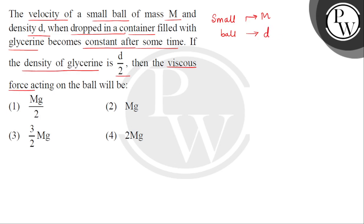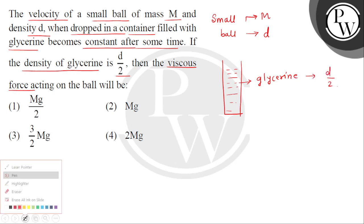अब इस ball को जब हम लोगे container में dip करते हैं, मान लेते हैं कि this is the long container और इसको fill किया गया है glycerin से. The liquid used here is glycerin और जिसकी density given है हमें d by 2, means half of the density of the material of the ball.